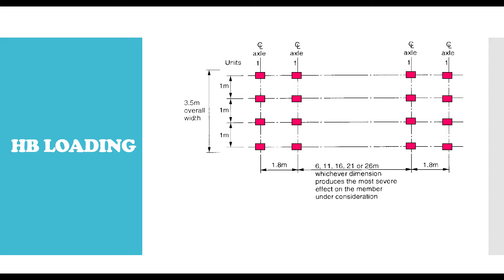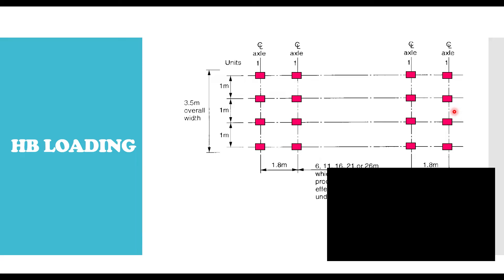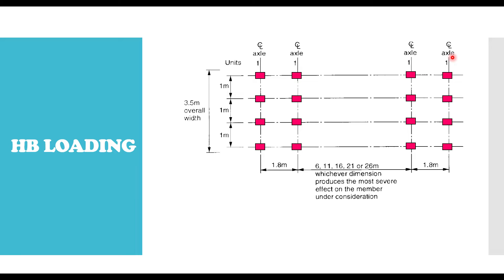The HB loading is generally represented by a vehicle diagram, and this is the major definition of HB loading according to the BS standard using the BD3701. This is a representation of a vehicle, and each vehicle is divided into four axles. So you can see axle one, axle two, axle three, and axle four. Each of the axles has different wheels — specifically, each axle has four wheels.